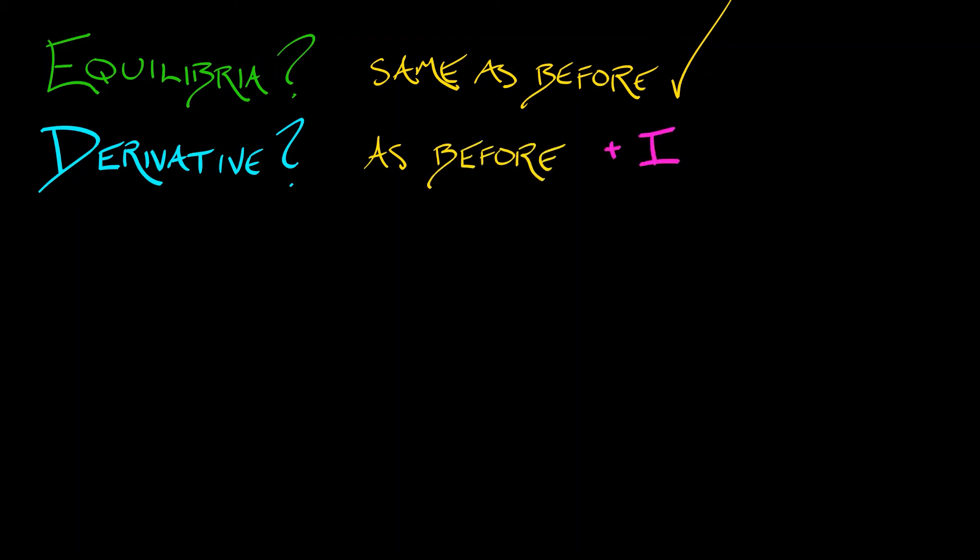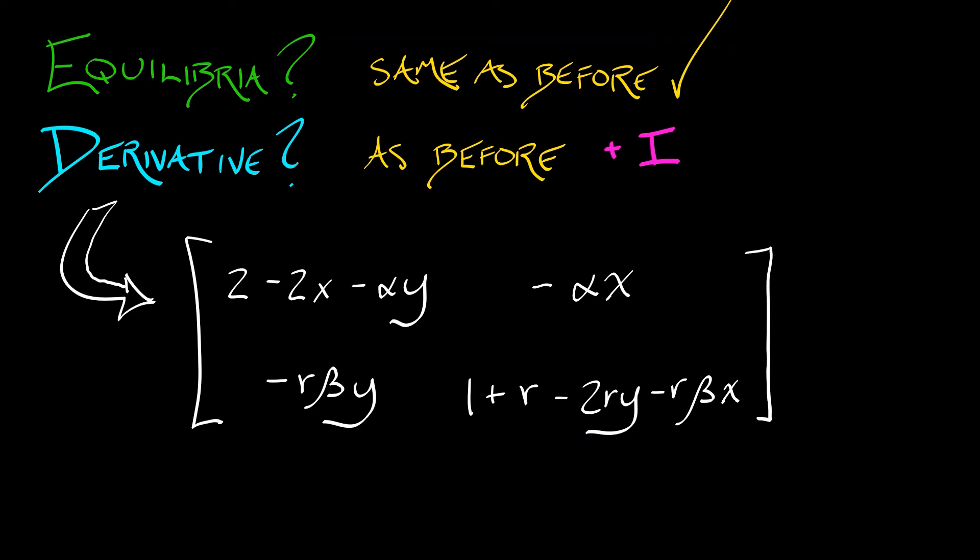So the derivative is, by columns, 2 minus 2x minus alpha times y, minus r times beta times y, minus alpha times x, and 1 plus r minus 2ry minus r beta x. You will notice that the only difference between this and what we saw in continuous time is along the diagonal terms, we've added one to each of those entries.